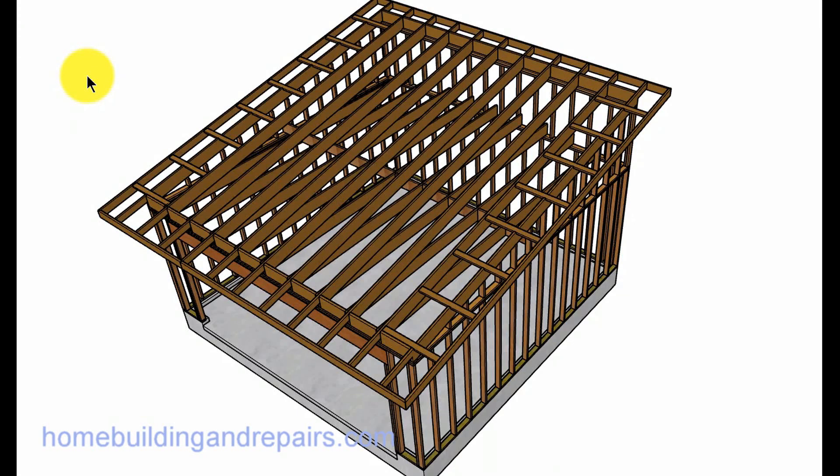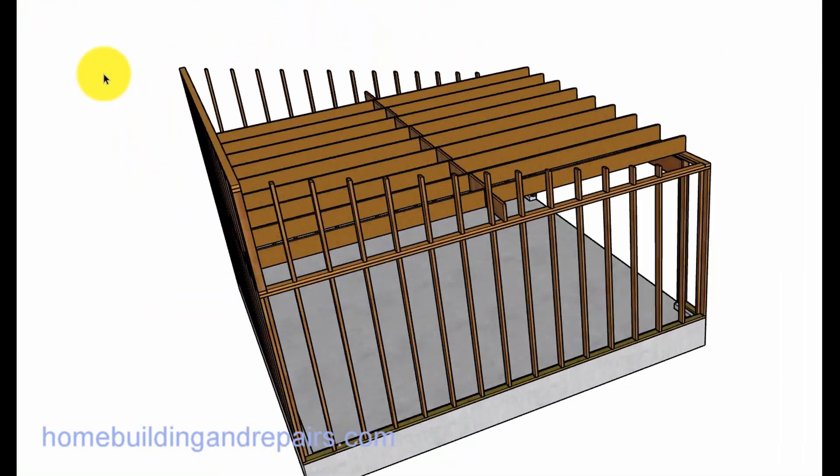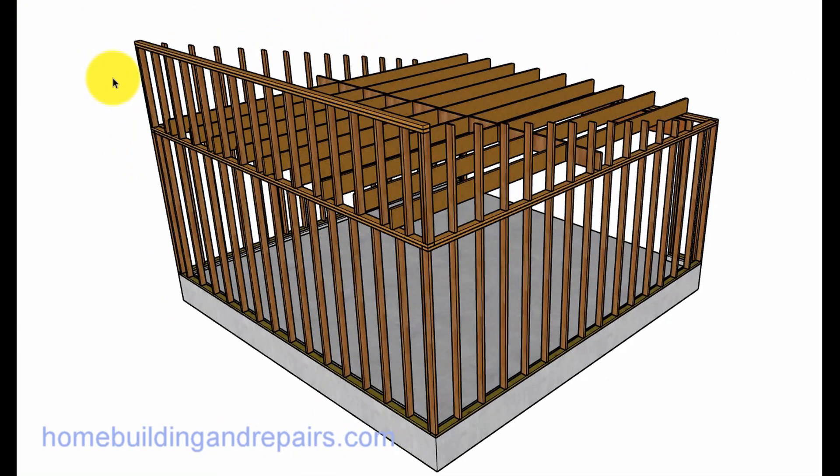Here's an example of a shed roof garage, two-car garage with shed roof framing. 2x10 rafters, of course your rafters might need to be larger, might need to be 2x12s depending upon snow loads and such. You're going to need to build a wall across here.